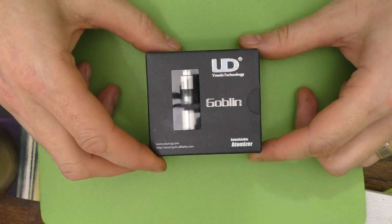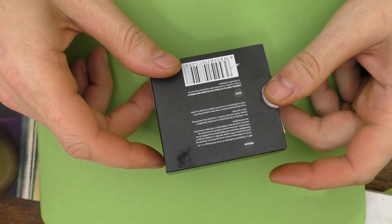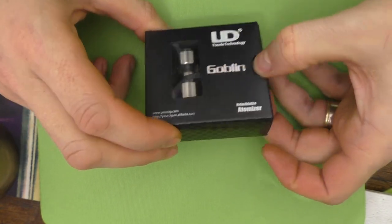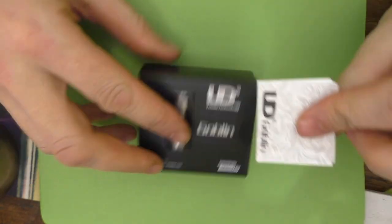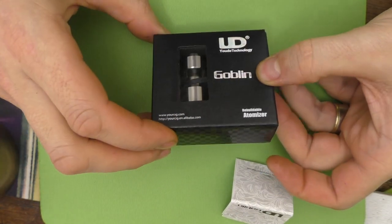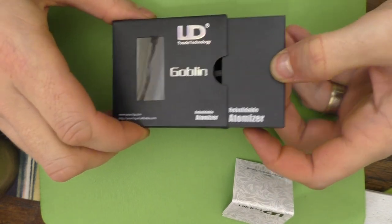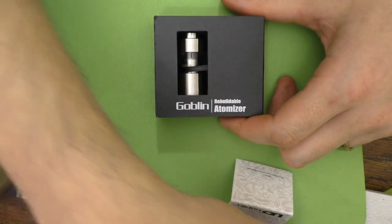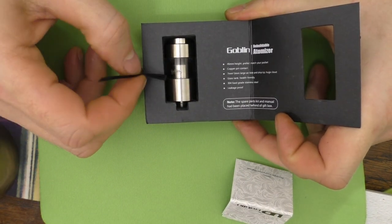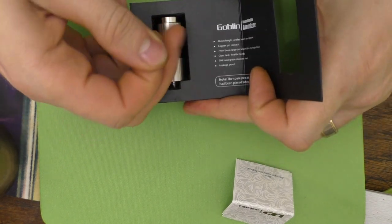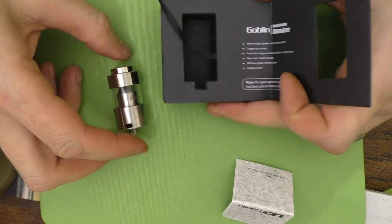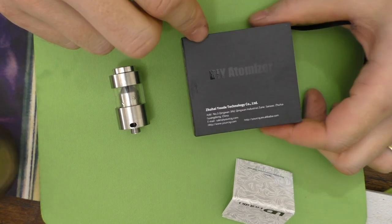So that's the box. Usual UD packaging. If you've bought anything else from them, you'll recognize the style. Manual. And slide that out. And there is your goblin. It comes out.